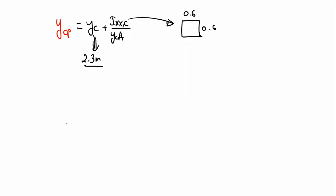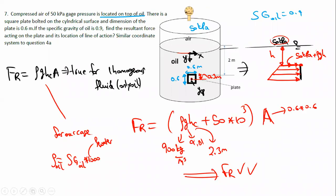For Ixxc, this is a square plate with dimensions 0.6 by 0.6, and we take the coordinate axis at the center. When you take the second moment of area about that xc axis, you get 0.6 to the power of 4 divided by 12. That is Ixxc, and the area value is 0.6 multiplied by 0.6.